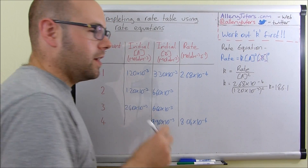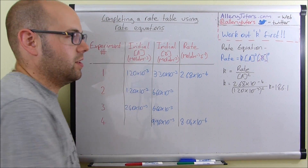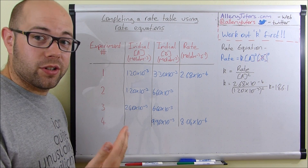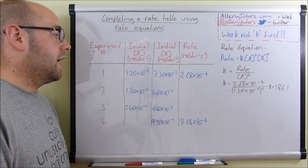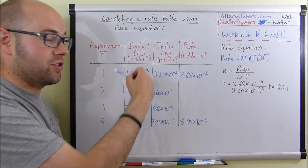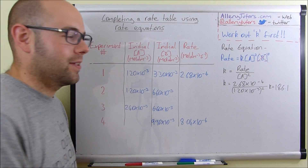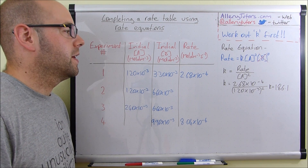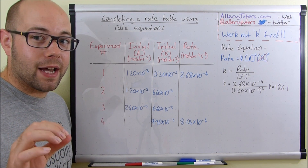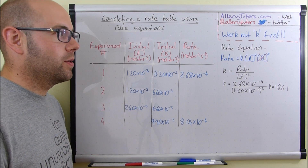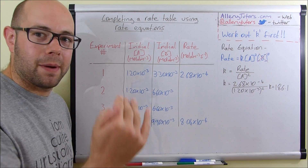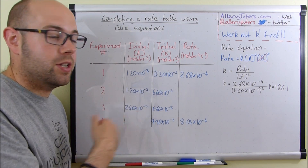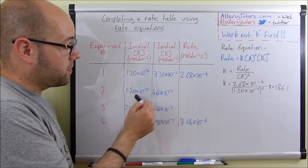This constant — 186.1 — is actually constant under the same temperature and pressure conditions for this reaction. So we can use this number to work out all the missing values. This is really vital. Note that the exam might not tell you to work out k initially, but always do it first because it makes everything so much easier.